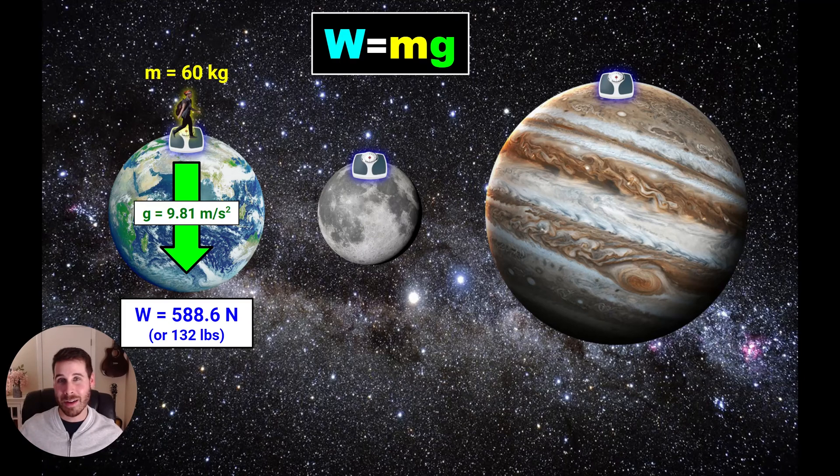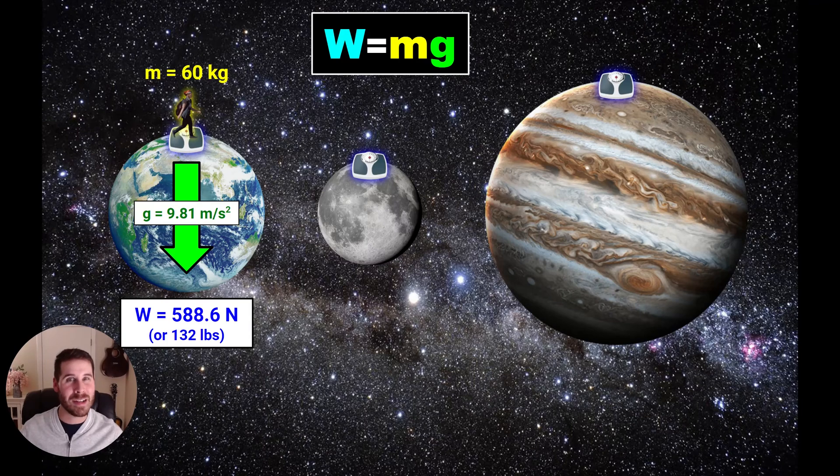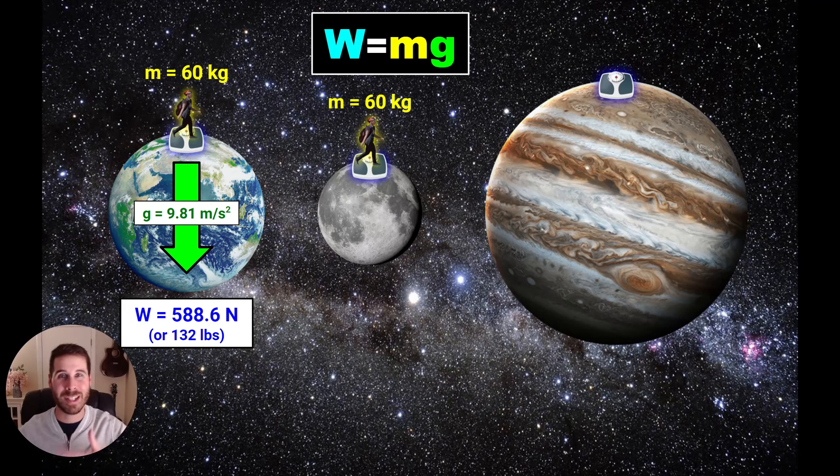So what would this be in American units? If we're not using the metric system, that'd be approximately 132 pounds. We don't really use pounds in our physics class, but just to give you an idea of kind of how much weight that is. So that's on Earth. What if we put that same person on the Moon? Well, you've probably seen footage before of astronauts walking on the Moon, and they're kind of bouncing around. It seems like they can jump high very easily. And that's because there's less gravity.